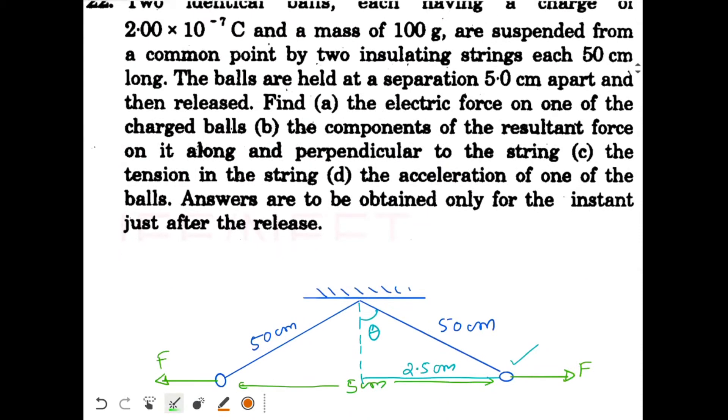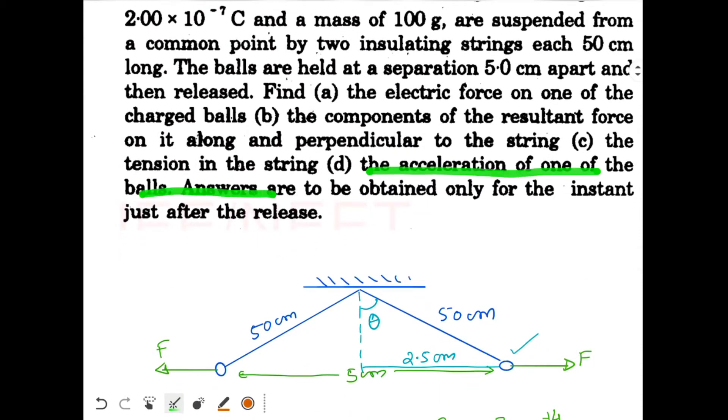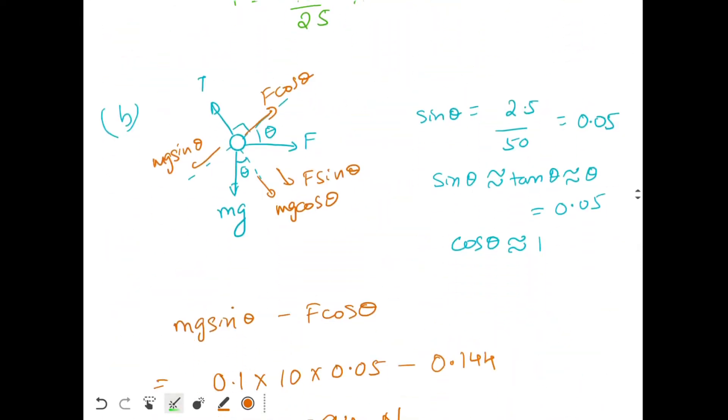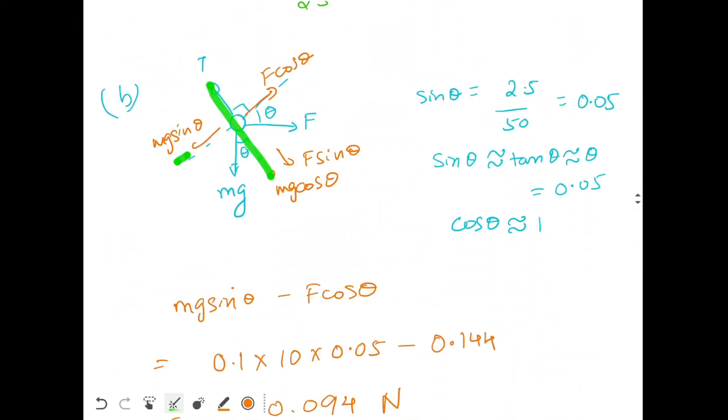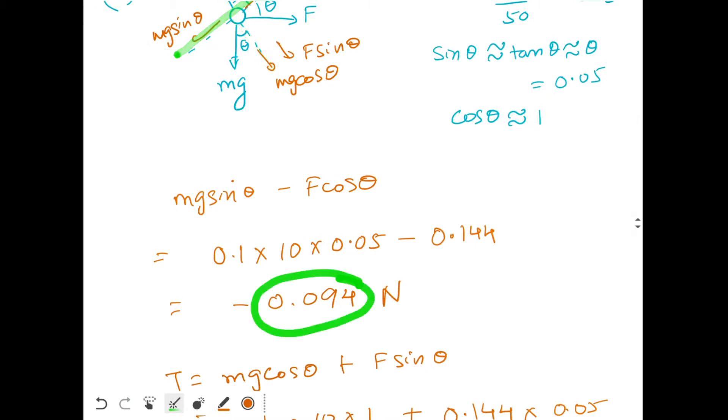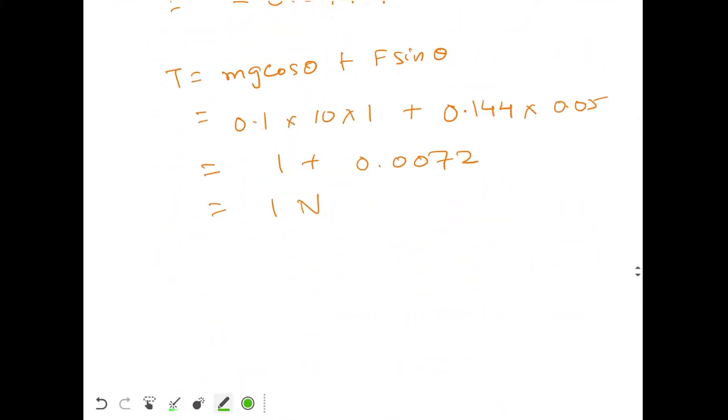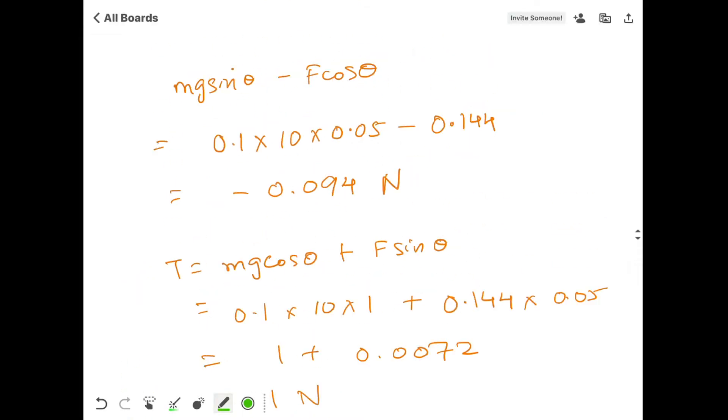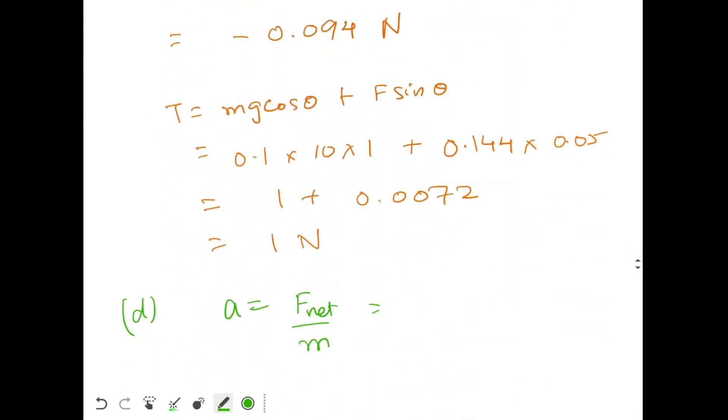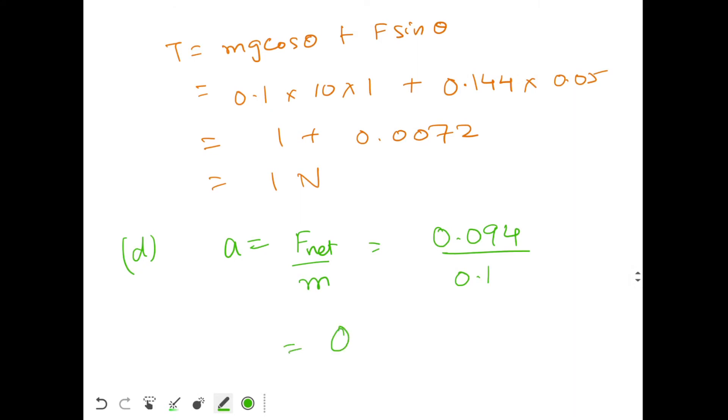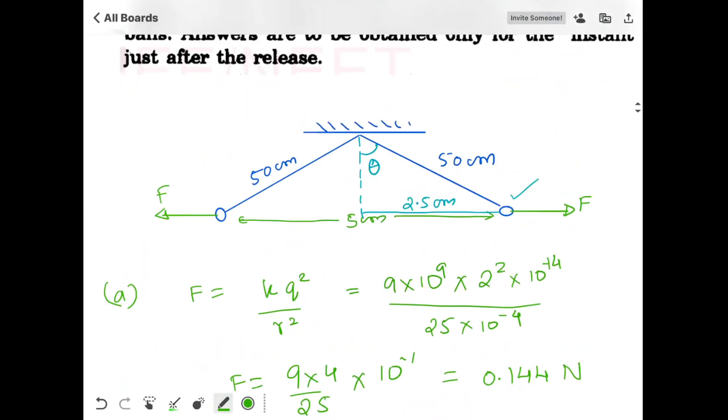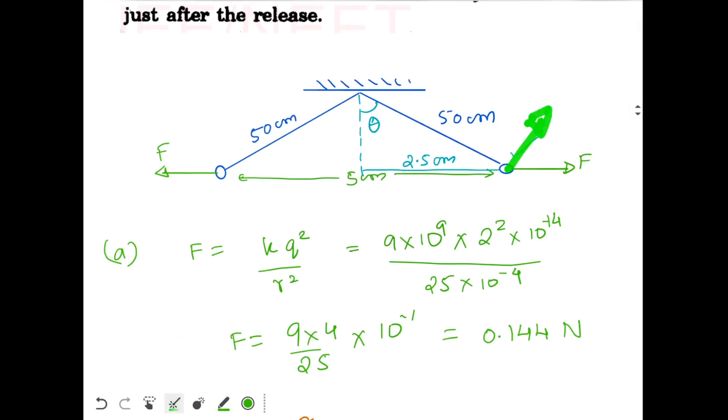This is your part C. Now for part D, the acceleration of one of the balls. That's very easy. So along this direction net force is zero. Along this direction net force is 0.094. So it's very easy to find acceleration. Acceleration will be net force divided by mass. So net force is 0.094 and mass is 0.1. So we get this to be equal to 0.94 meter per second square. This acceleration will be perpendicular to the string, in this direction.